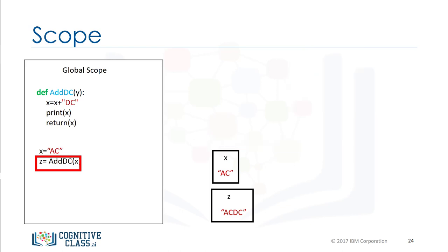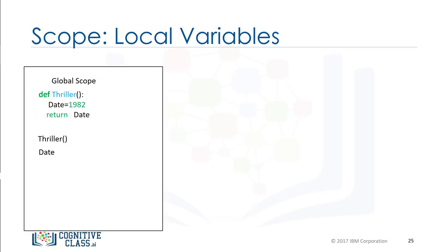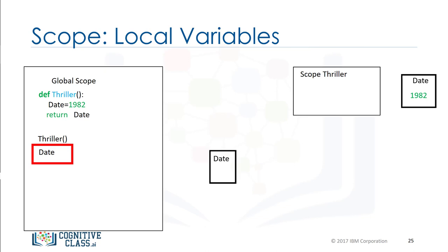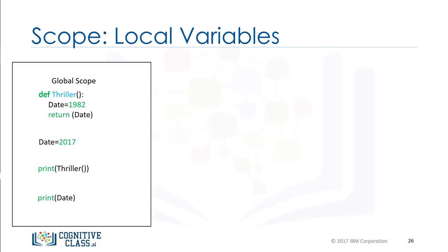After the value is returned, the scope of the function is deleted. Local variables only exist within the scope of a function. Consider the function thriller — the local variable date is set to 1982. When we call the function, we create a new scope, and within that scope the value of date is set to 1982. The value of date does not exist within the global scope. Variables inside the global scope can have the same name as variables in the local scope with no conflict.